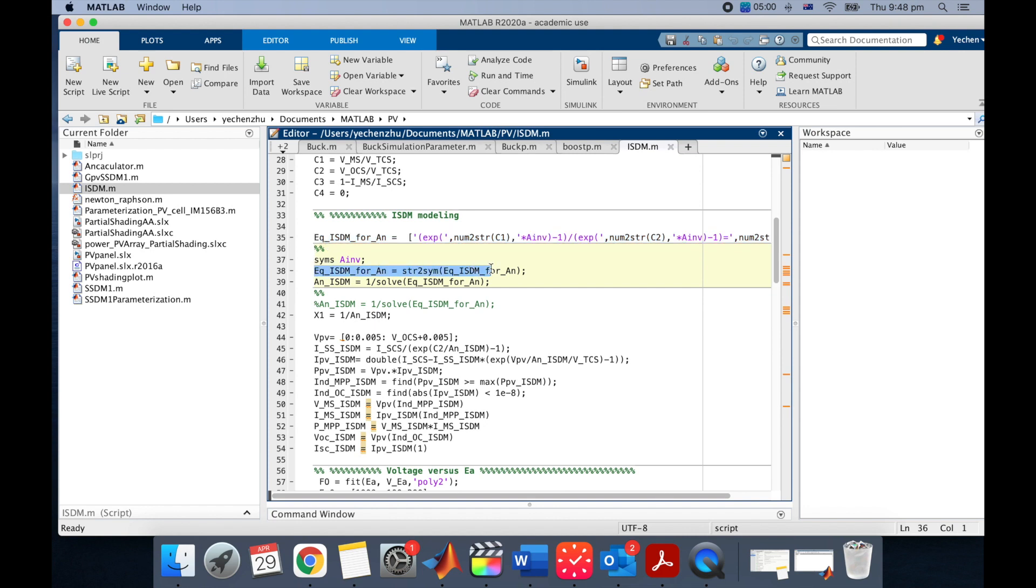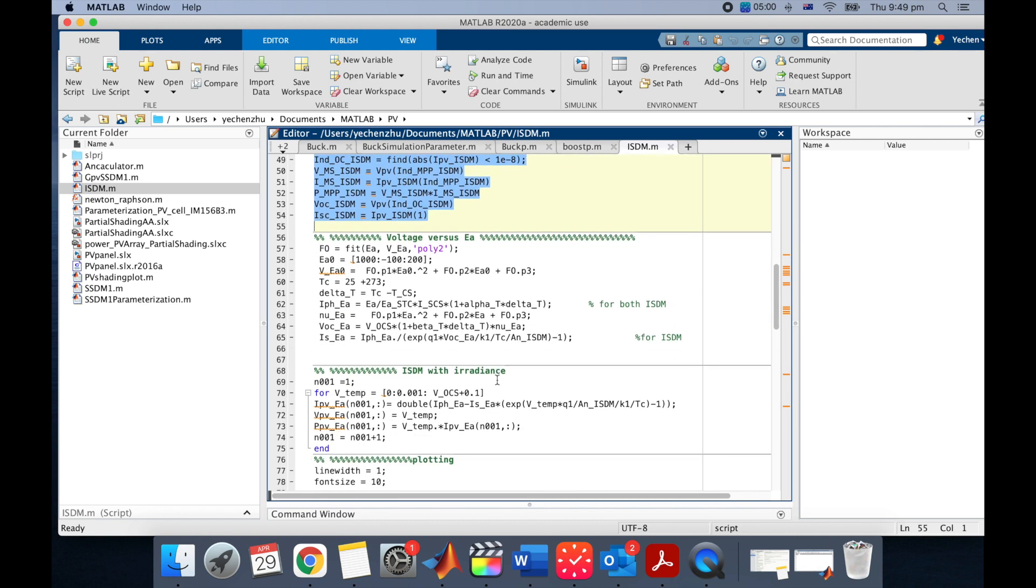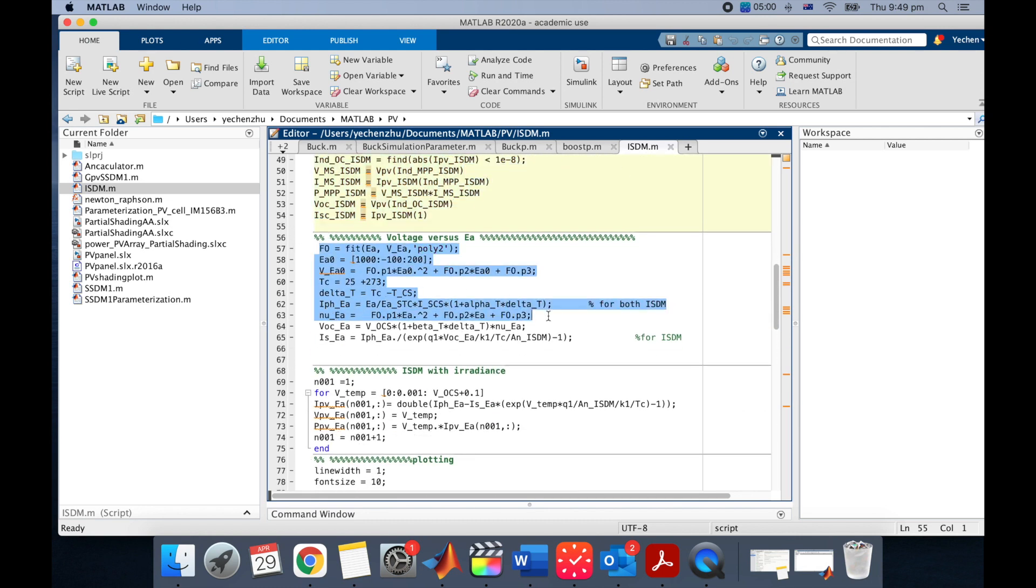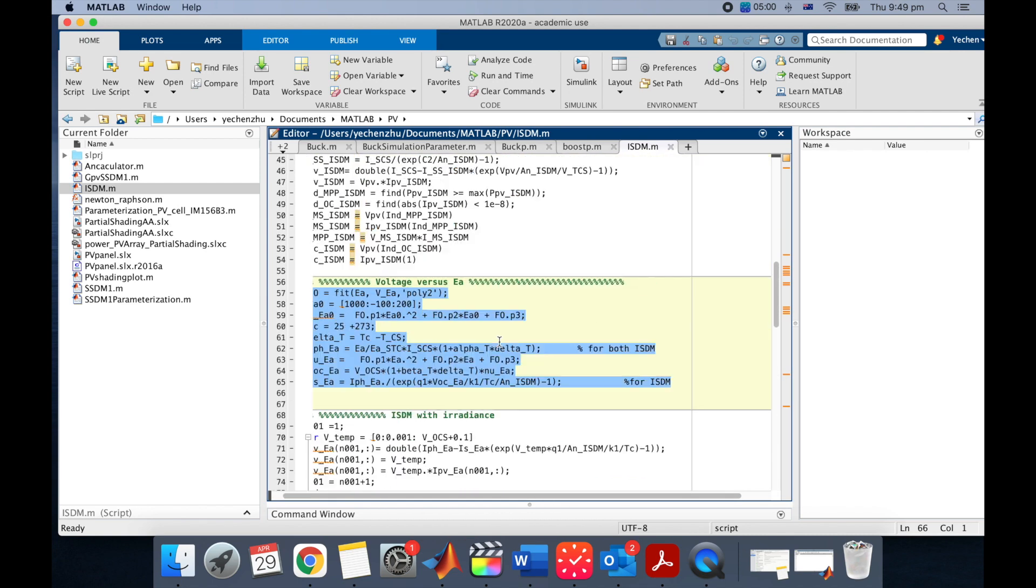And this is the equation of ISDM model. And this is how I solved the AN. And these are how I calculate VPV and PPV. And this part is to build the temperature and irradiance difference. And all these are plotting things.